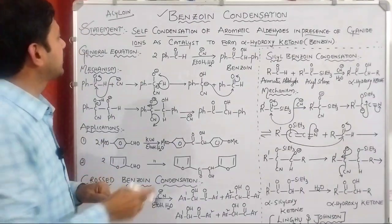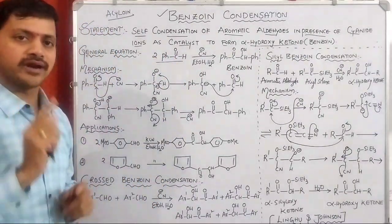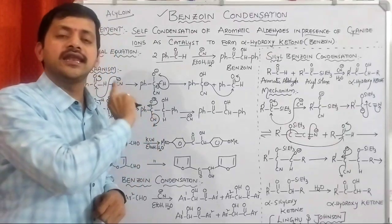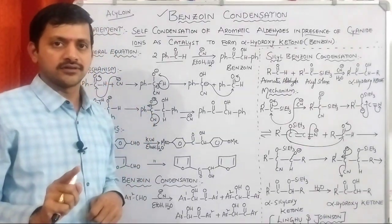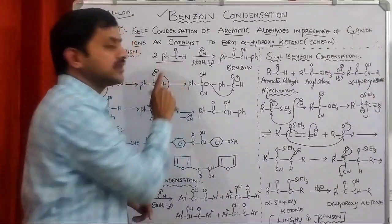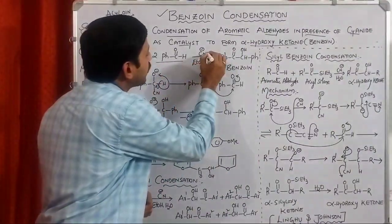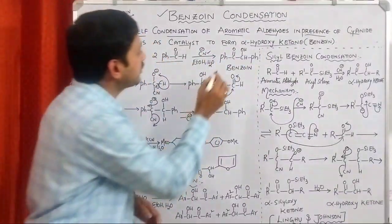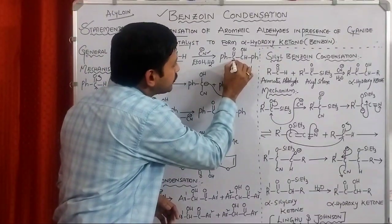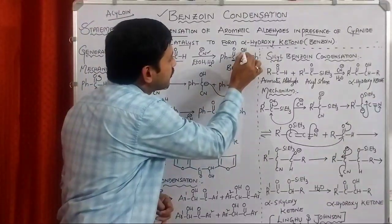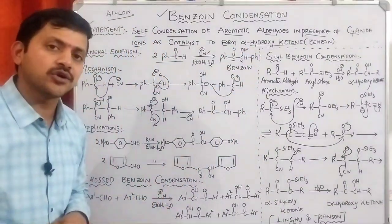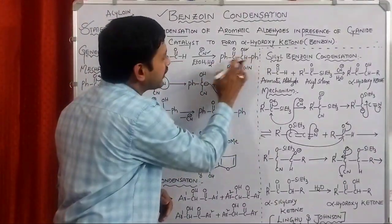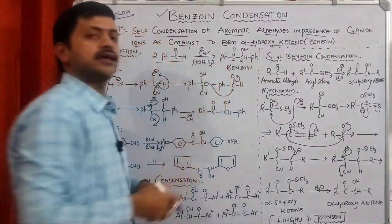In the general equation, we take 2 moles of the aromatic aldehyde. The condition is that the aromatic aldehyde should not contain any alpha C-H protons. These undergo self-condensation in the presence of cyanide catalyst to produce an alpha-hydroxy ketone. The ketonic functional group is the C=O, and the alpha position contains an OH group — that is why it is called alpha-hydroxy ketone. Since we observe phenyl rings in the alpha-hydroxy ketone, it is commonly called benzoin.